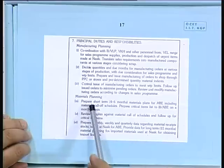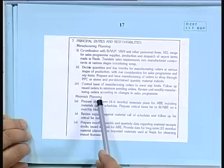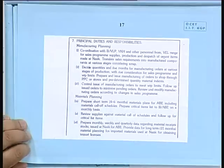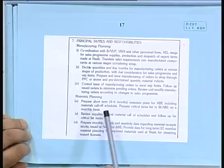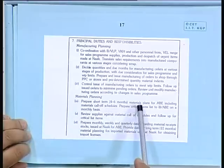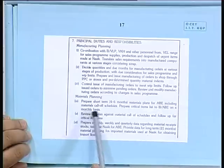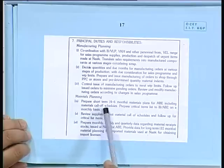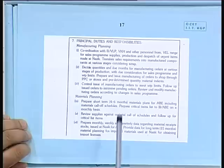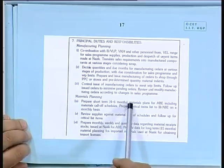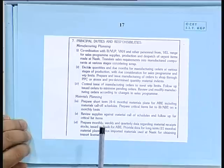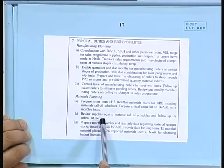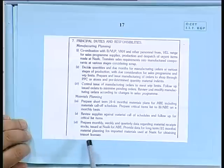Materials planning: prepare a short-term 4 to 6 months materials plan, including material call-off schedules. Prepare a critical items list on a monthly basis. Critical items are materials with limited vendors — where you are at the mercy of one or two vendors. You have to keep extra attention focused on them, because if supply does not come, your production may stop. Prepare monthly, weekly, and quarterly data regarding material receipts, stocks issued.